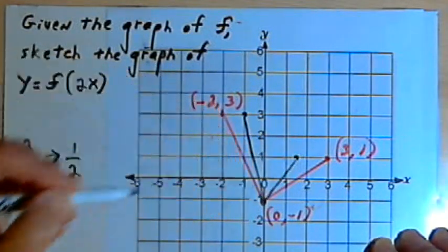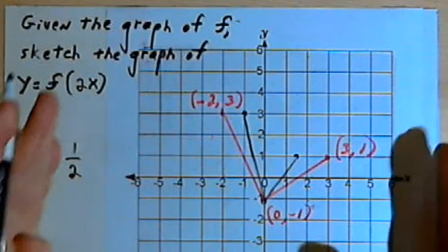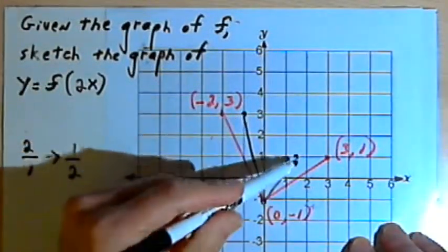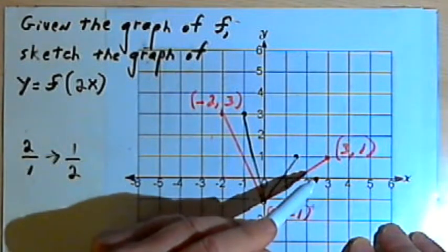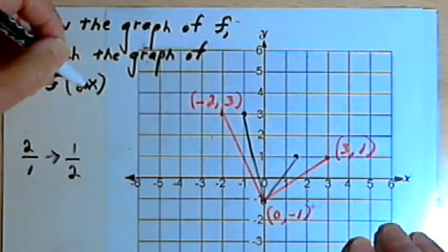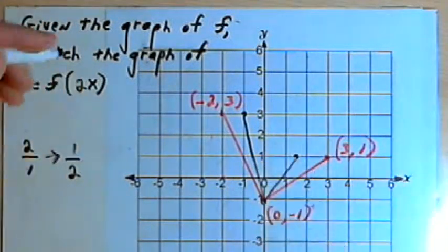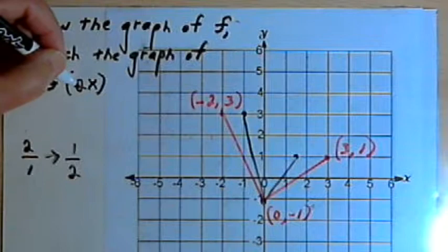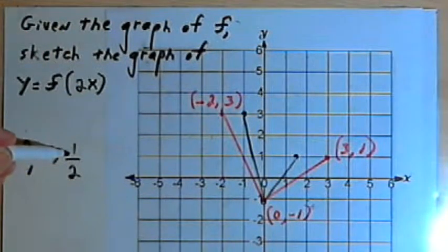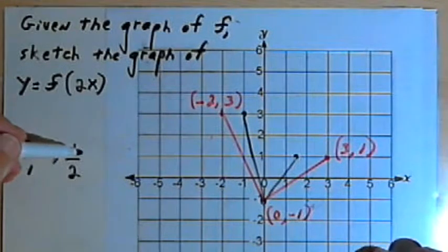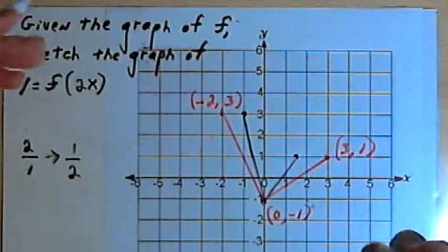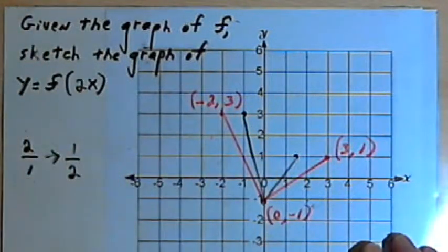When I connect those points, what I see is the graph has become compressed. We've shrunk it in. It's now only half as wide as it was originally. So this 2x is shrinking the graph. Any number that's greater than 1 is going to have a reciprocal that's a fraction. And that's going to mean that a number greater than 1, as the coefficient of the x, is going to shrink the graph and compress it.